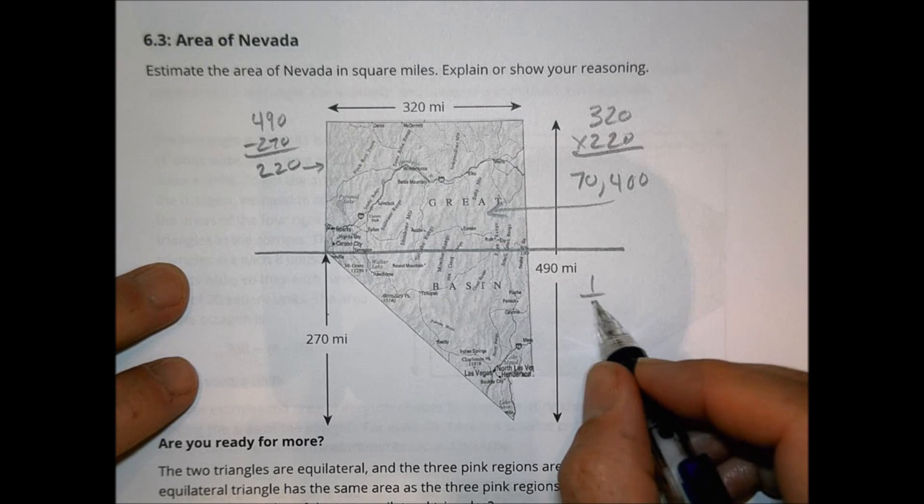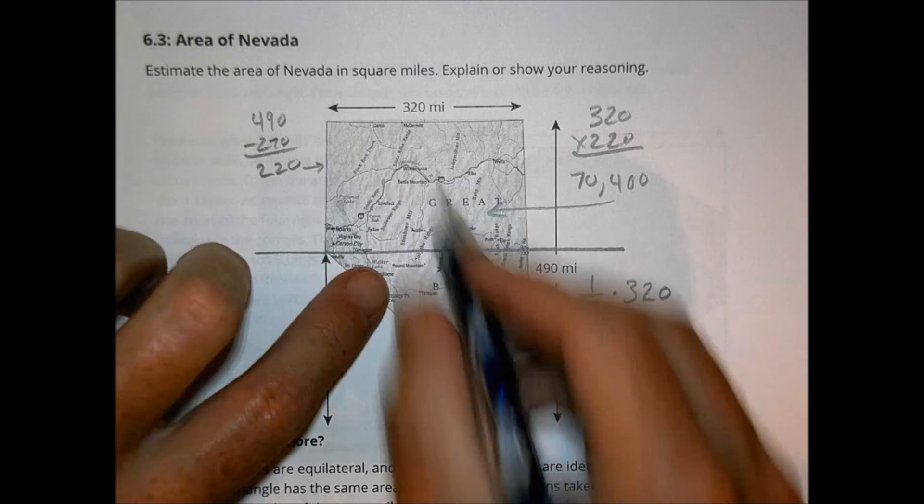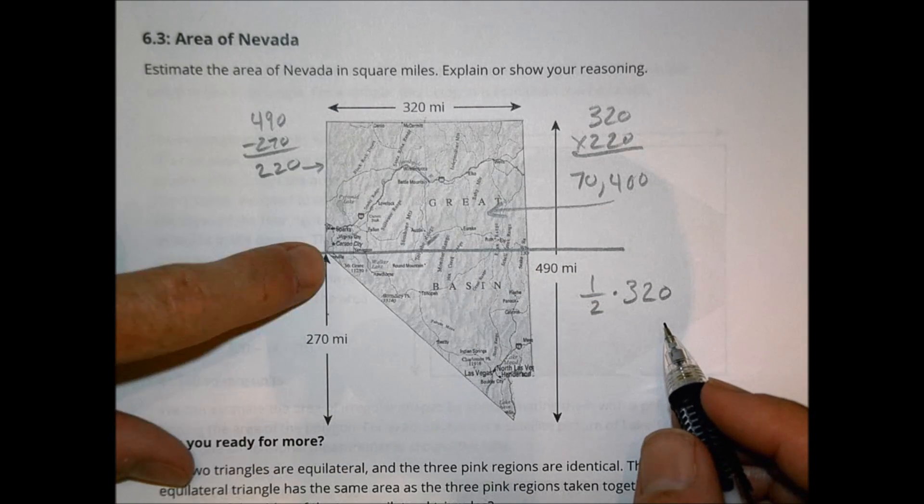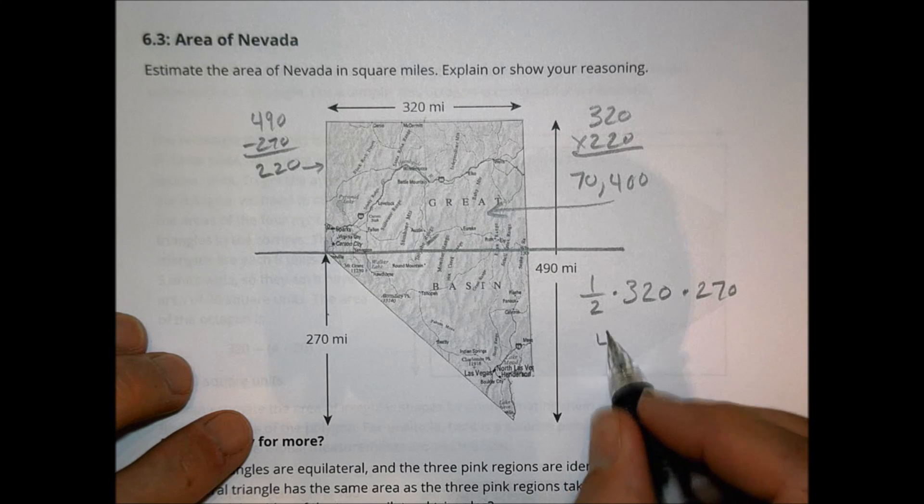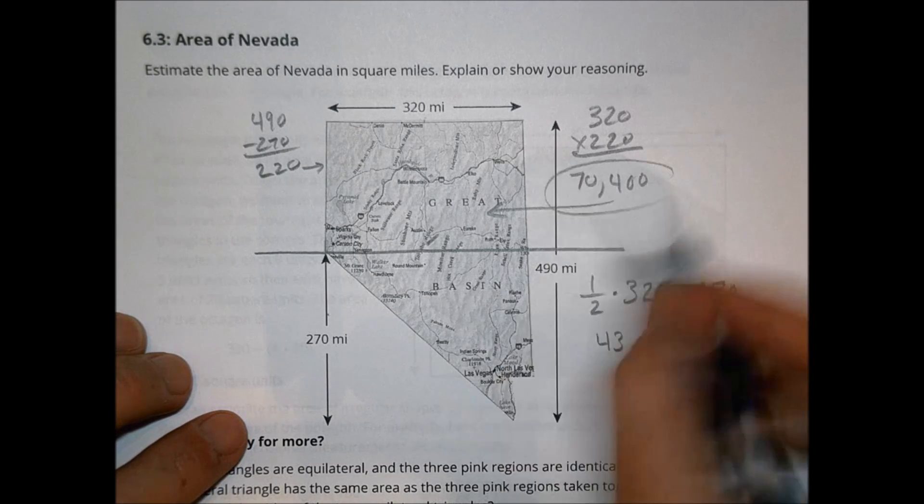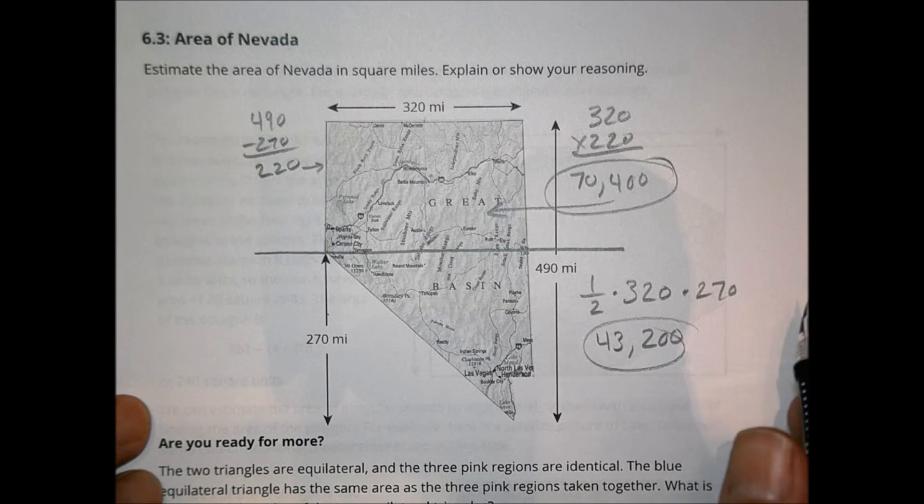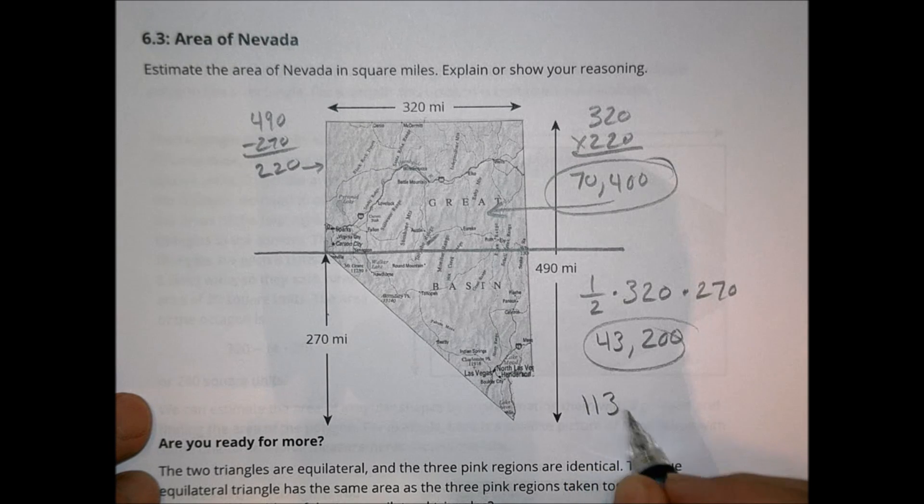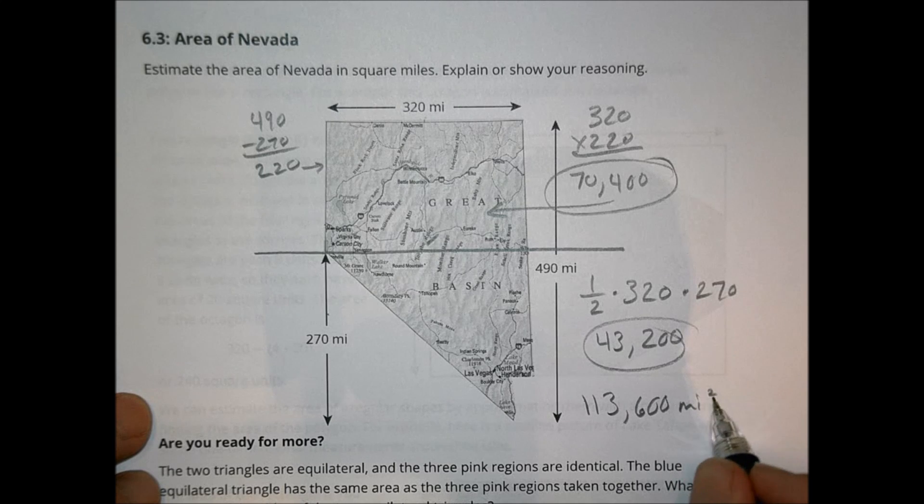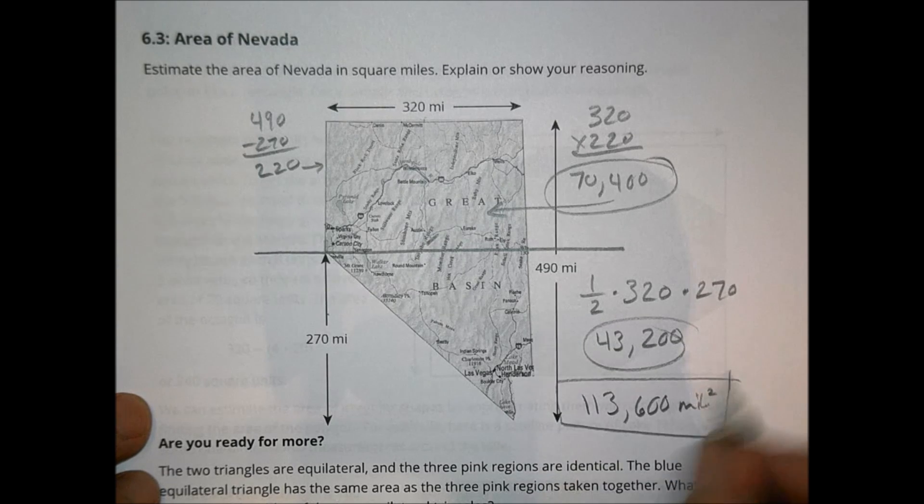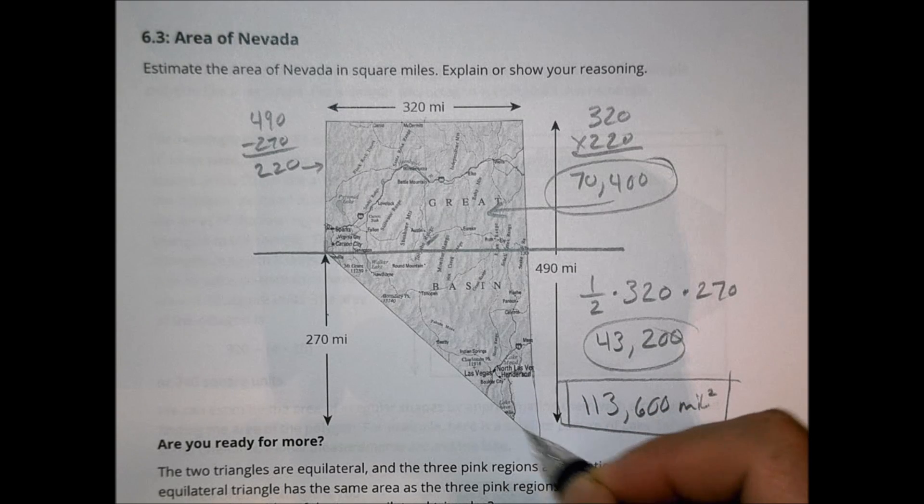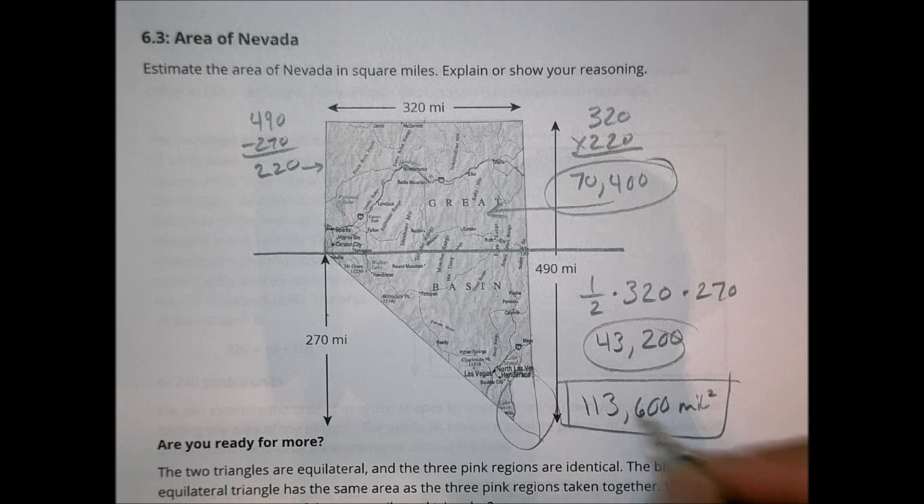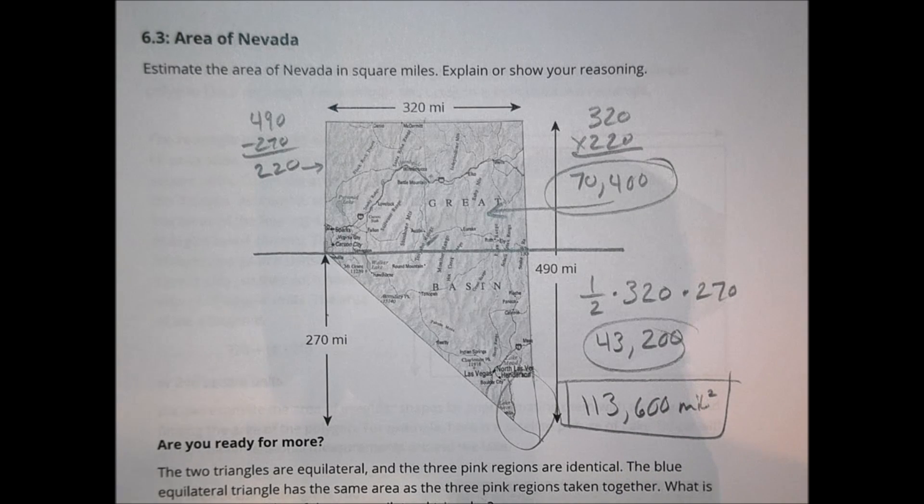So 320 times 220 is going to equal 70,400. That's the area of the rectangle. Over here, I can do one half of the base, which is 320, times the height, which is here to here times 270. And one half of 320 times 270 is going to be 43,200. So when I take this and that and combine those together, that tells me my total area, which is 113,600. And this is miles squared or square miles. Again, this is just an approximate there. It's not going to be perfect because really it should be probably less than that because this triangle should continue there. And I'm missing kind of a chunk of the triangle. So it might be more like 110,000. Again, it's just an approximate value. It's an estimate. It doesn't have to be perfect.